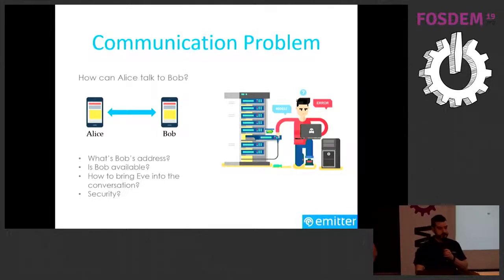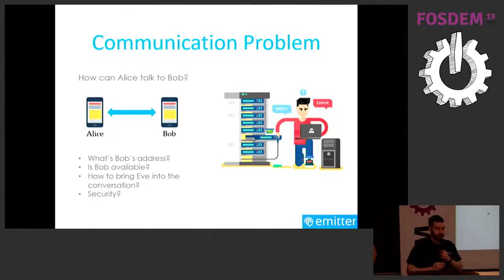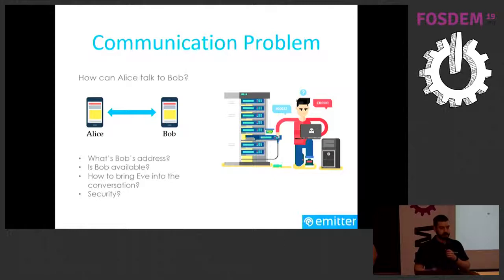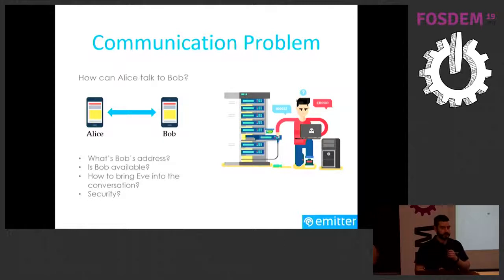The problem we're trying to solve is a basic communication problem: I want to talk to Tom over the internet to have a chat. I could use a simple socket — that's a well-known mechanism — but I would need to know Tom's address, we would need to be available at the same time, and we'd need a secure connection with TLS. That's already three problems to solve.